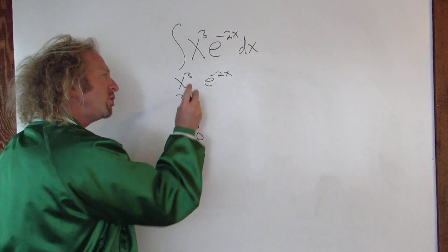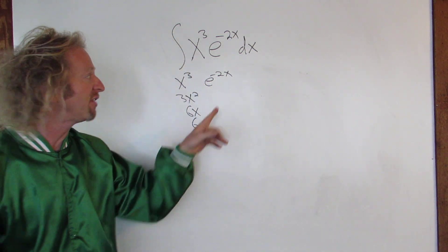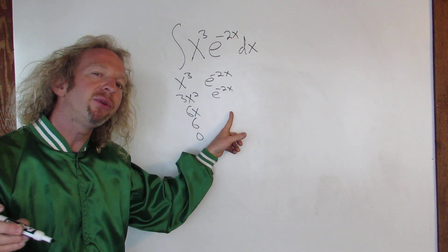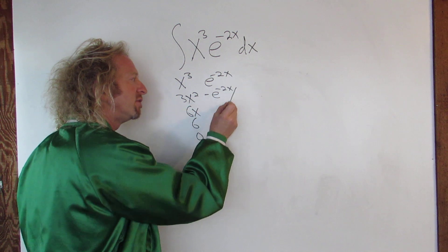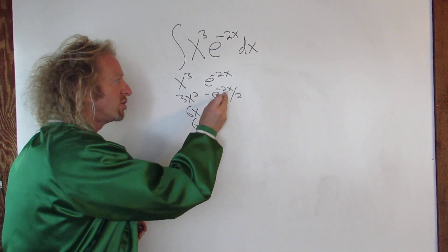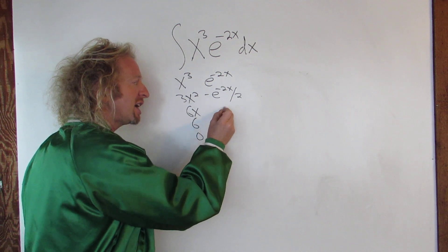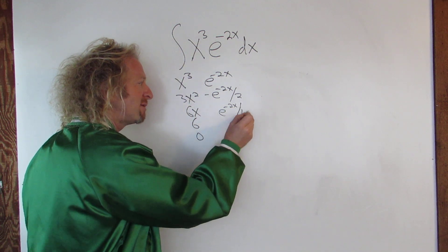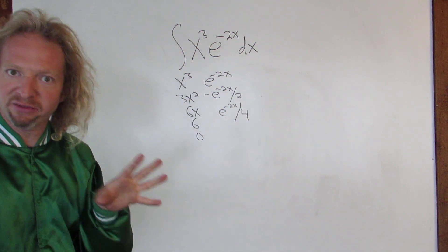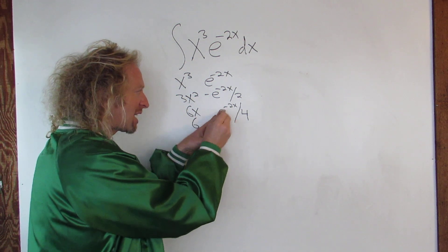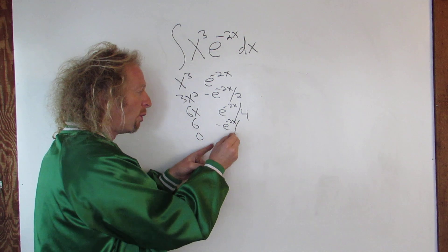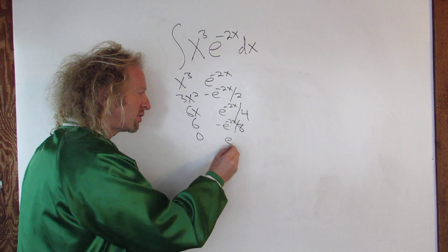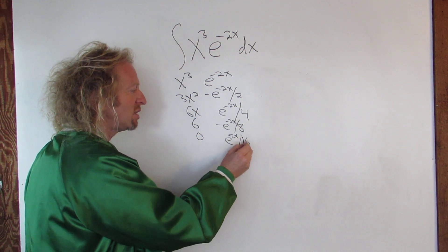Then you just integrate this one. When you integrate e to the negative 2x, you divide by the number. So the first time you get e to the negative 2x divided by negative 2 — I'm going to put the negative here and the 2 over here. Then you do it again, dividing by negative 2 again, so you get e to the negative 2x over 4, and negative times negative is positive. Then it becomes negative: e to the negative 2x over 8, because 2 times 4 is 8. And one more time, positive: e to the negative 2x over 16, because 2 times 8 is 16.